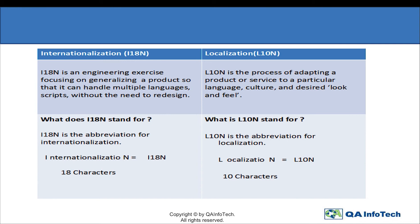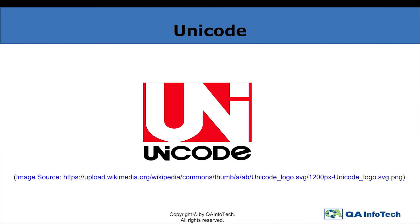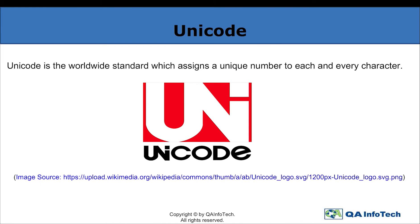In internationalization, we generalize the product so that it can handle multiple languages without any major changes in its design. Generally referred to as I18N, the abbreviation includes the 18 characters between the I and N of internationalization. On the other hand, localization is the process of adapting a product or service to a particular language, referred to as L10N.